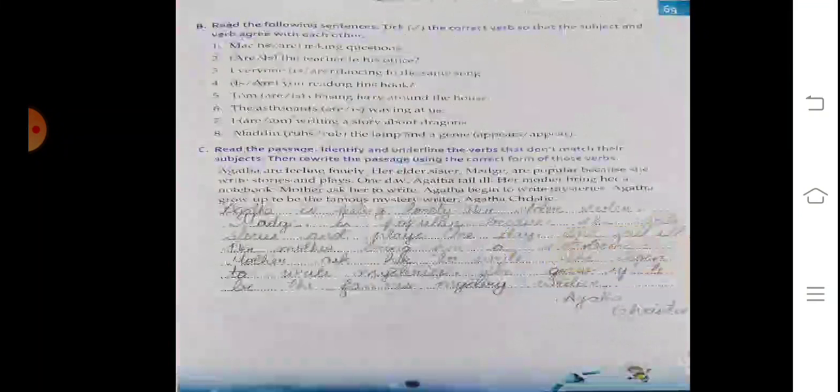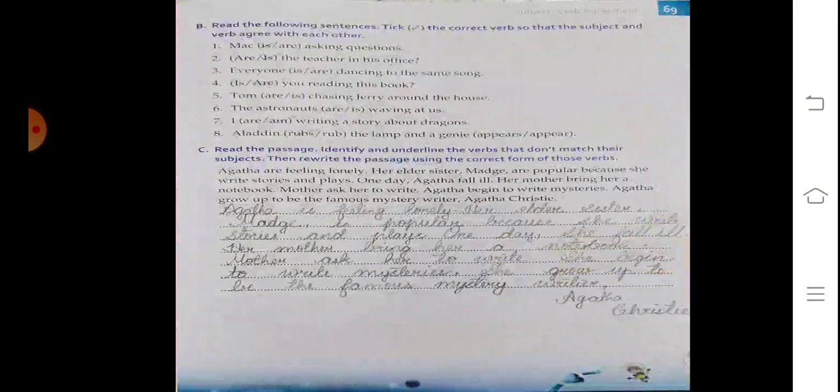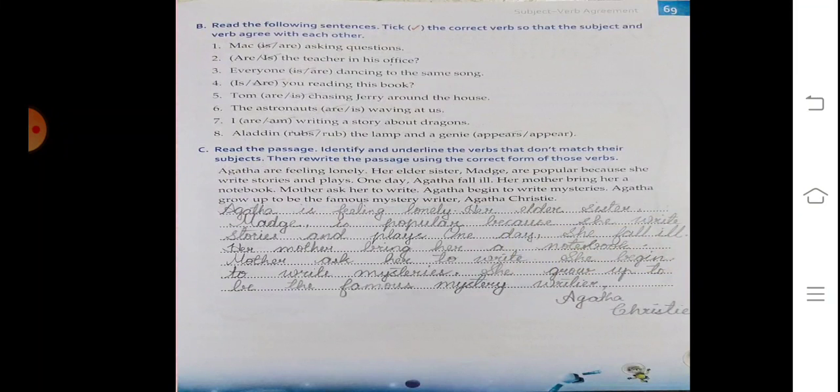Exercise B: read the following sentences. Take the correct verb so that the subject and verb agree with each other. 'Mac is asking question' - tick this one. 'Is the teacher in his office?' - tick this one. 'Everyone is dancing to the same song' - tick this one. 'Are you reading this book?'